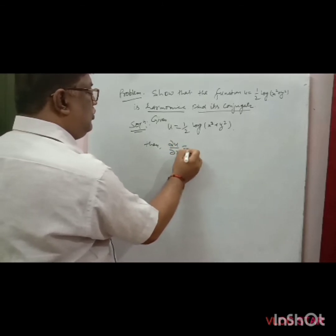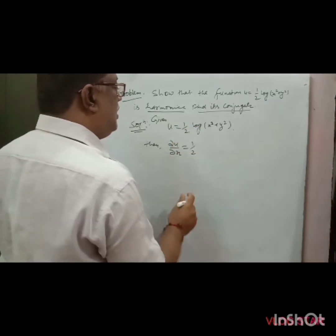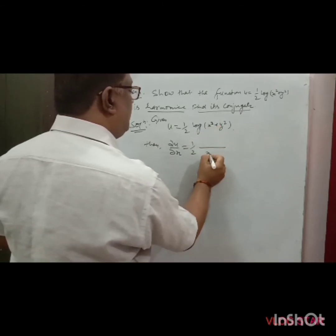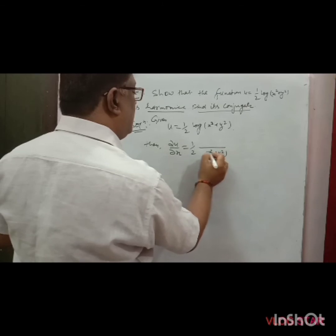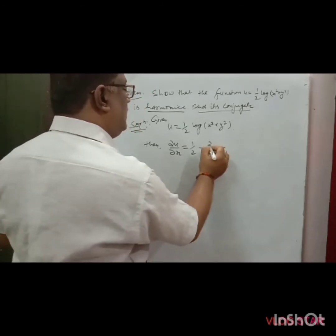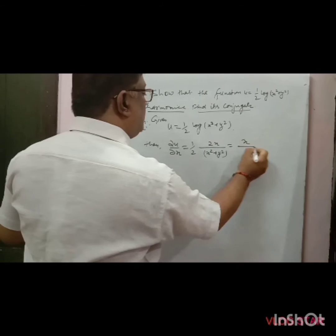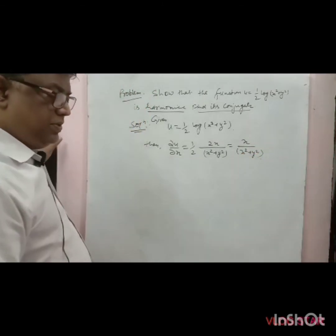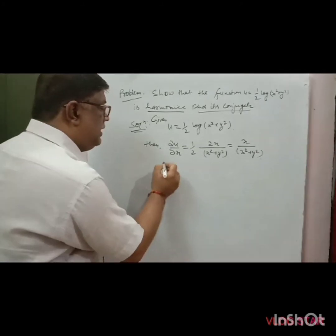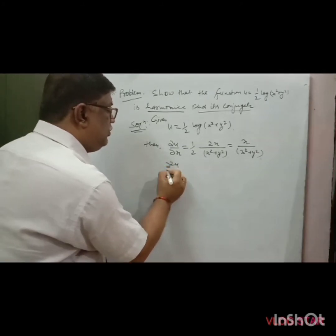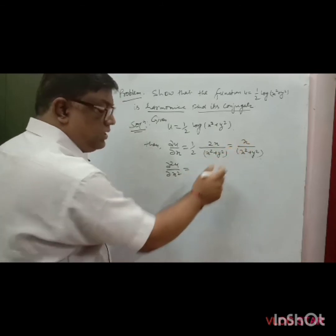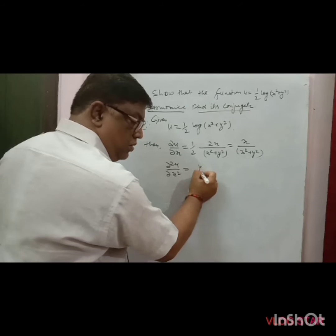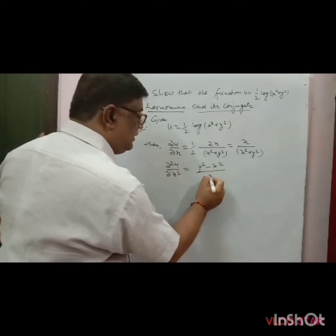Find ∂u/∂x: differentiating ½ log(x² + y²) with respect to x gives x/(x² + y²). Then find ∂²u/∂x²: using the quotient rule, this equals (y² − x²)/(x² + y²)². This is equation 1.